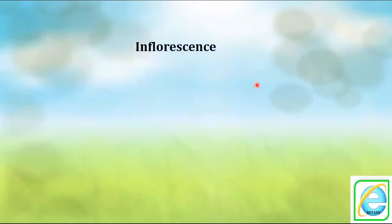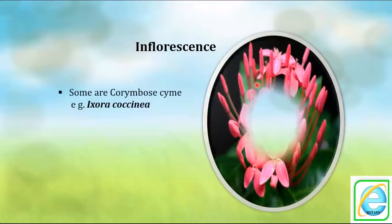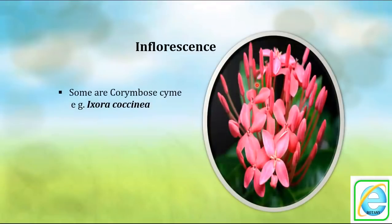The inflorescence is a bunch of flowers. In the Rubiaceae family it is a corymbose cyme. Cyme means the older flower is at the center and younger ones at the periphery. In corymbose type, all younger flowers acquire the same height as the older flowers, forming a complete platform-like structure. This is called corymbose cyme — example is Ixora.